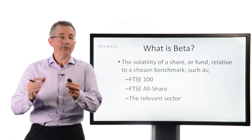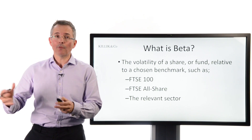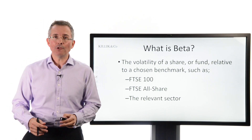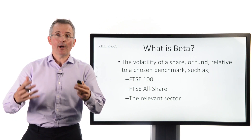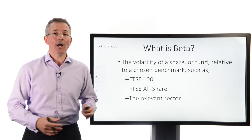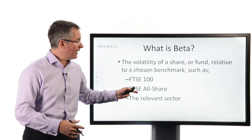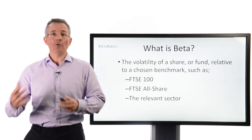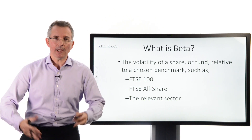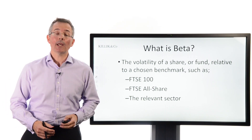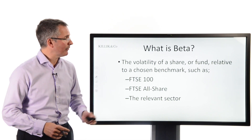Beta is the volatility — in one number — of a share or a fund, relative to a chosen benchmark. The benchmark is to some extent chosen by the person who calculates it. So it could be the FTSE 100, for a large UK share; it could be the All Share; or it could even be the relevant sector. One key question to ask as an investor is: how has beta been calculated, and what's the chosen benchmark?